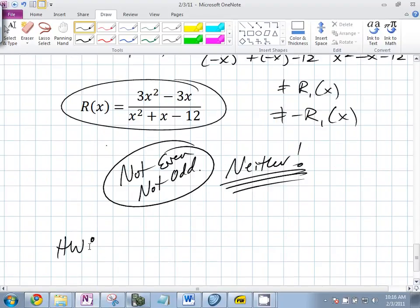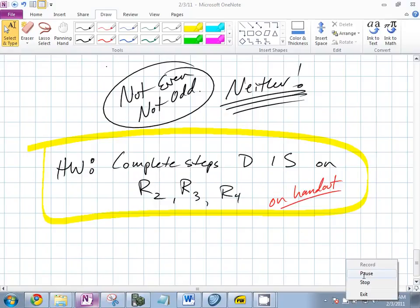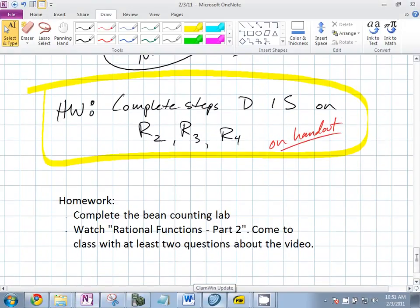So, the first part of your homework tonight, complete steps DIS on R2, R3, and R4. That's the first part of your homework tonight. This is on the handout. Ready to have some fun? So much fun. Your homework. You're going to finish the bean counting lab with the data you have. The questions are on the back. Finish that. Also, you're going to watch Rational Functions Part 2 and come in with at least two questions. So, that means you're doing those three, the three analysis questions, R2, R3, R4. You're going to complete steps DIS. You're going to continue the bean counting lab and watch Rational Functions Part 2.